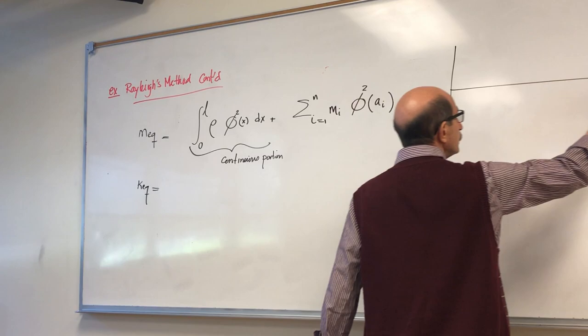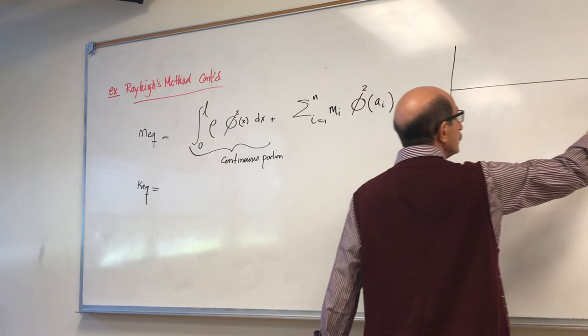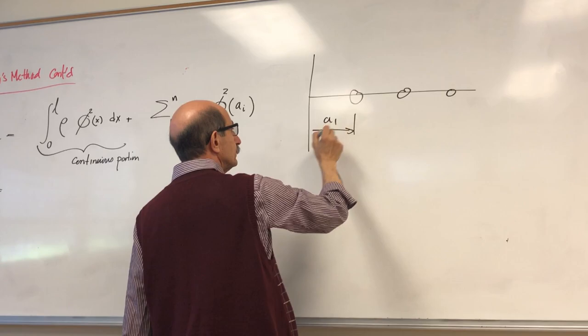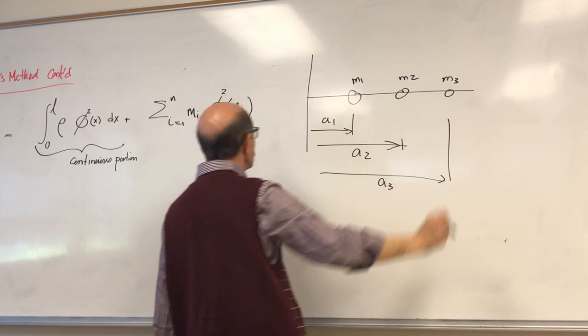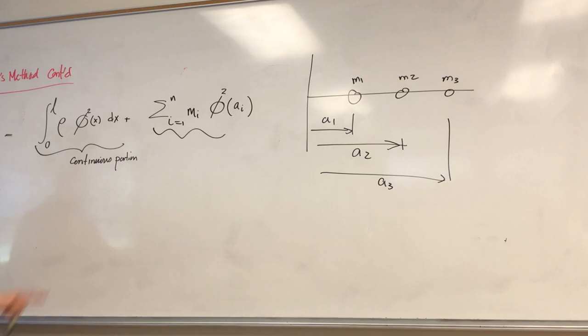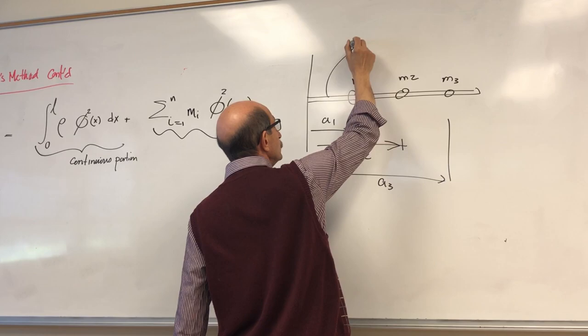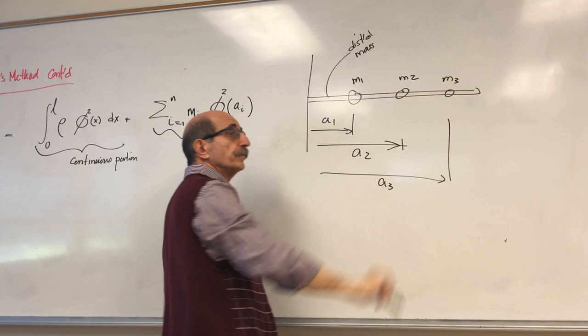In other words, if you have several masses located at different positions — m1, m2, m3, and so on — that term applies for those discrete masses, while the integral term applies for the distributed mass.